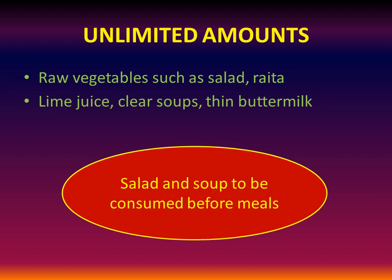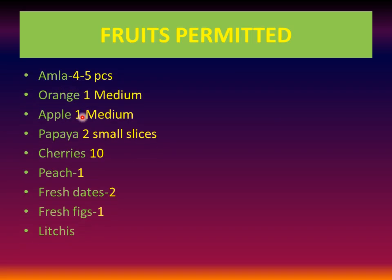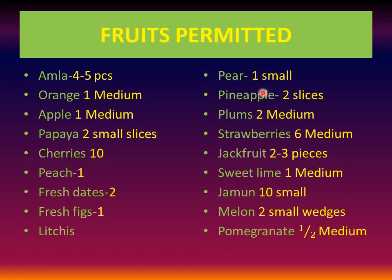Salad and soup should be consumed before meals. Fruits to avoid: mangoes, chikoo, grapes, sitafal, bananas, and jackfruit. Fruits that are permissible include amla, orange, apple, papaya, cherries, peach, fresh dates, fresh figs, lychees, pear, pineapple, plums, strawberries, sweet lime, jamun, melon, and pomegranate — all in the required daily quantities as specified.